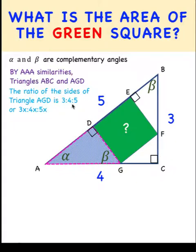And when this is the ratio, it could also be written as 3x is to 4x is to 5x, where x is any positive constant.